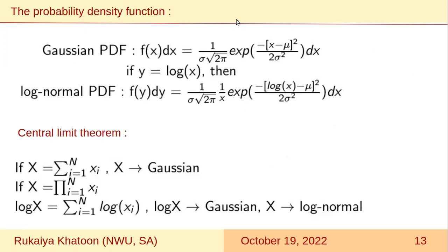Here I will briefly explain how the multiplicative process can explain the log-normal behavior. If you consider a process where capital X is a summation of many sub-processes x1 + x2 + x3 and so on, and if the number of sub-processes n tends to infinity, then according to the central limit theorem, the distribution of X will lead to Gaussian. Now if capital X is a multiplication of many sub-processes and you take a logarithm on both sides, then log(X) will be a summation of log(x1) + log(x2) + log(x3) and so on. Therefore, if n tends to infinity, the distribution of log(X) will be Gaussian. Therefore, the distribution of X on a logarithmic scale is Gaussian — meaning the distribution of X is log-normal.